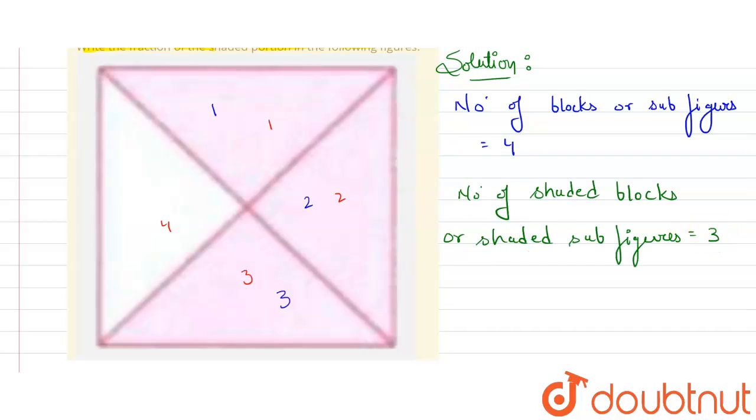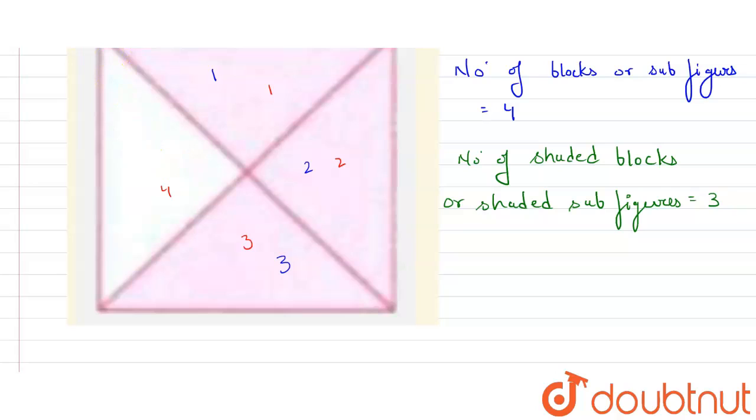So let's write here: number of shaded blocks, or shaded sub-figures, equals three, because we counted there are three blocks which are shaded. And here we need to write the fraction of the shaded figure. Fraction is given by numerator upon denominator.